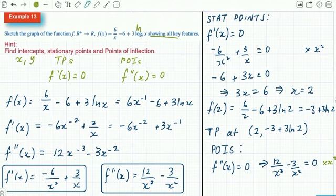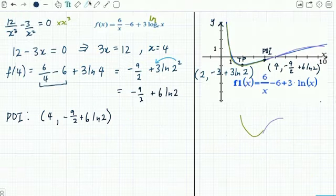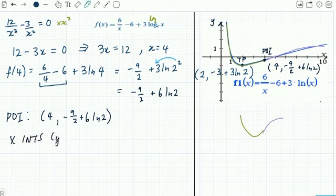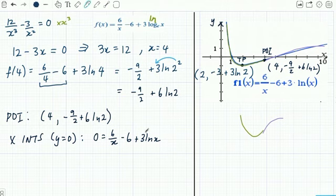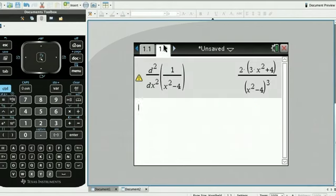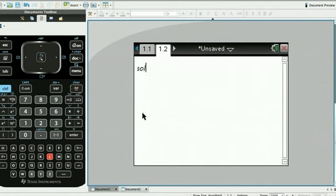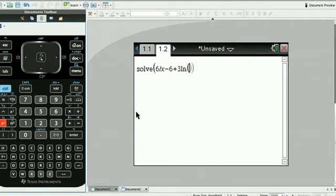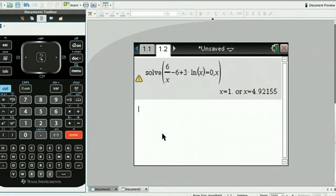The last thing you want to do is state your intercepts. X-intercepts are when y = 0, so 0 = 6/x - 6 + 3ln(x). I would solve this using the CAS because it's a bit messy. Using solve on the CAS, you get two values: x = 1 and x ≈ 4.92. Those are approximate values and close enough.